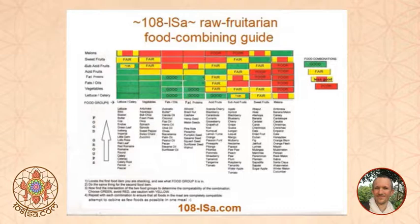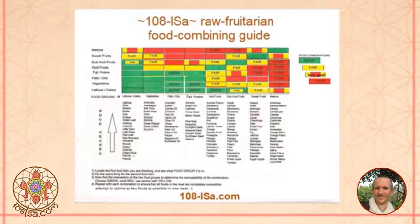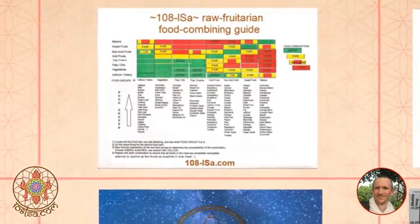Then you can have about 10 bananas, which is another 1000 calories, and you have your 2000 calories complete. If you cannot always get the highest quality sweet fruit, you can prepare some soaked dates and eat them at the very end to make up for the lesser calories. For example, if your mangoes or jackfruit were not that sweet and you are missing 300 calories, add 100 grams of soaked dates as a dessert so you get your calories in and will not be calorie deficient.